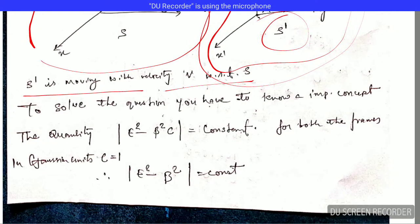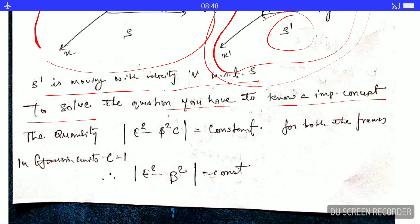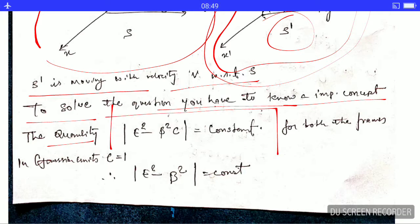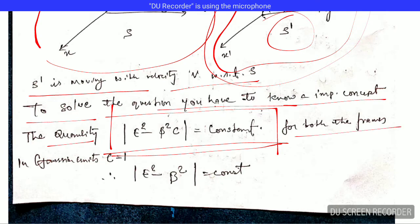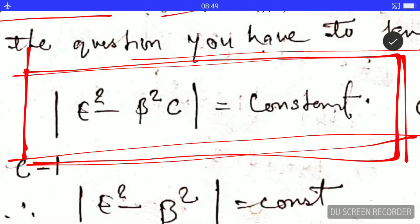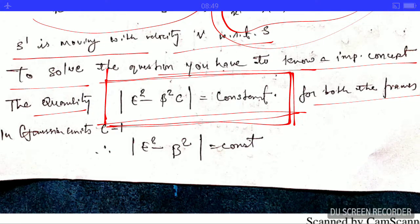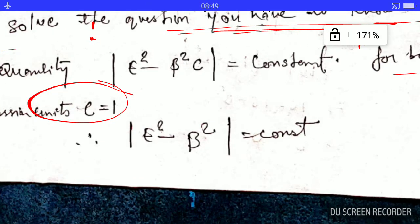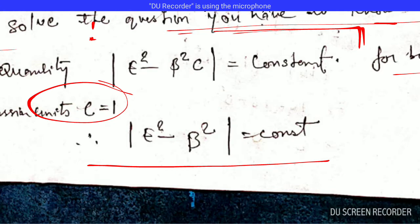To solve this question, you need to remember an important concept: the quantity E² − B²/c² is constant in both frames. It is very important to remember this. Also note that the question uses Gaussian units, in which the speed of light c equals 1. So in Gaussian units, this invariant quantity simplifies to E² − B² = constant.